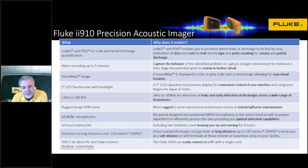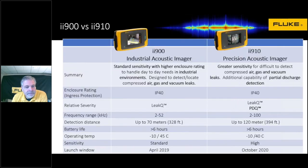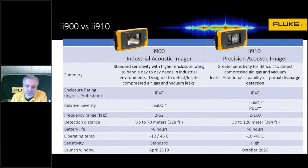Here's a comparison between the two units. The PDQ mode on the II910 is there, the higher frequency range is there, the farther detection is there. We did not have to change the IP rating on the device — it's the same as the other model, same number of microphones, battery life is the same. With the II910, we have the ability to detect at longer distances — up to 394 feet away we can see PD, leaks, you name it. The only little caveat is a slight reduction in the temperature range, from 45 degrees Celsius to 40 degrees Celsius, which is about 10 degrees less Fahrenheit.